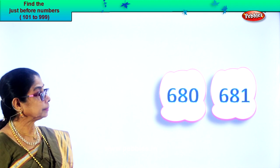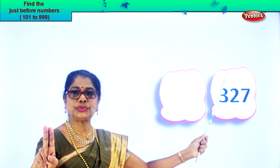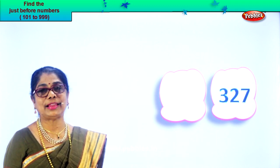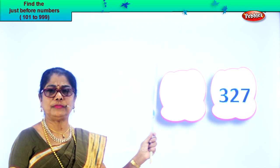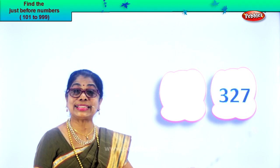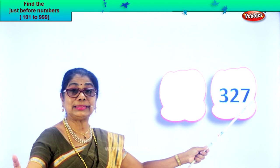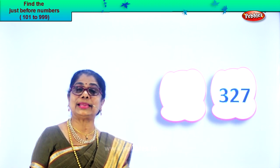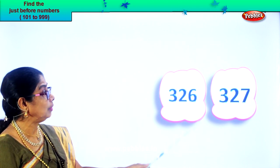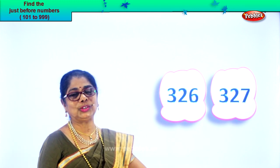Let's take another number. In the ones place you have seven, tens place two, and hundreds place you have three. Read: three hundred and twenty-seven. We are looking for the number just before three hundred and twenty-seven. In the ones place you have seven. What is one less than seven? Six. So if you have twenty-seven, one less is twenty-six. Three hundred and twenty-six is the number just before three hundred and twenty-seven. Three hundred and twenty-six, three hundred and twenty-seven.